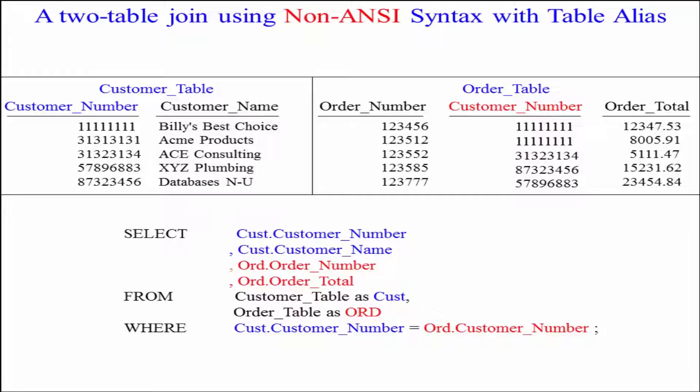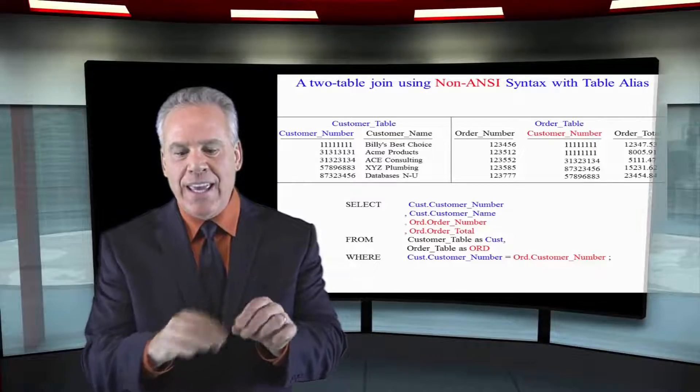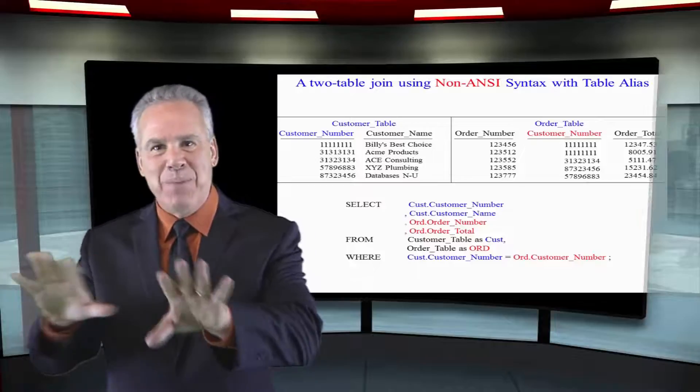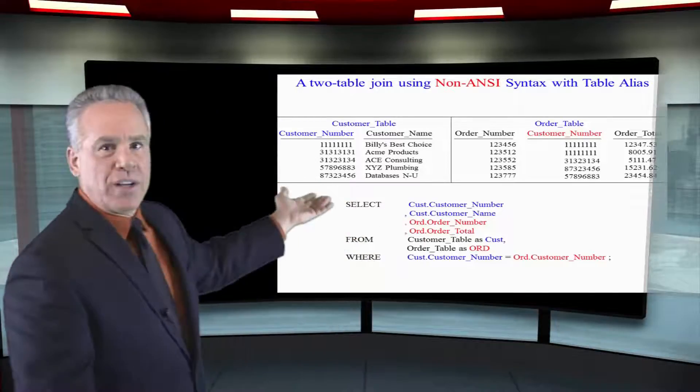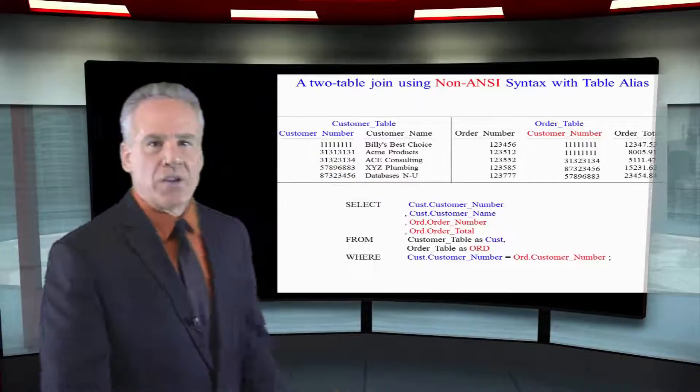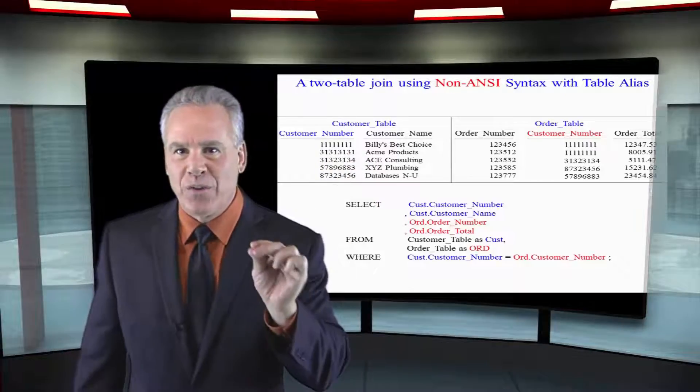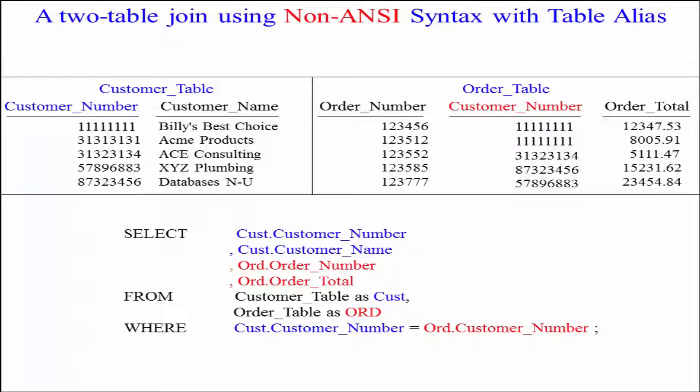But it's a rule that you have got to fully qualify any column that is in both tables because the system gets confused. From obviously customer table as cust, order table as ord, and down below is the where clause again. And you can see I've color coded cust dot customer number and ord dot customer number.